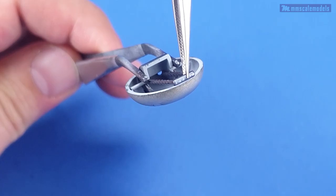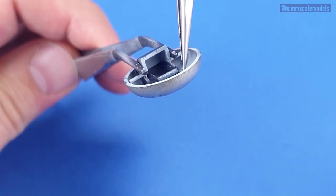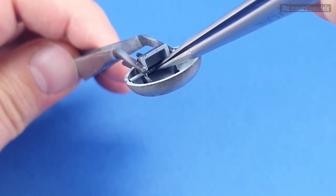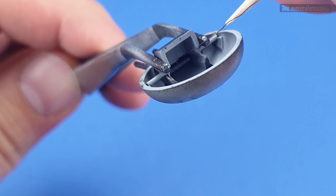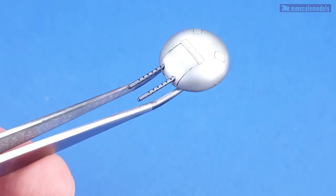The turret gun barrels which I destroyed trying to drill them out were replaced with these 3D printed parts which I designed and printed myself. The Elegoo Mars 3 did a great job printing at 10 microns. What you can see here is a part that I did not sand at all.